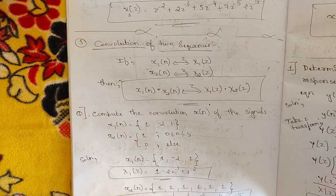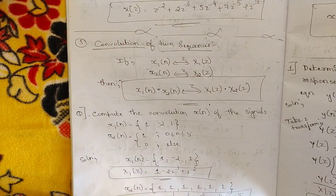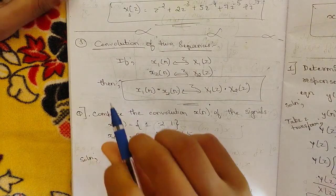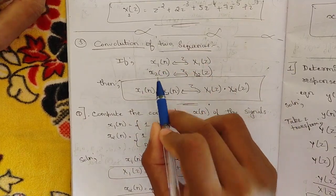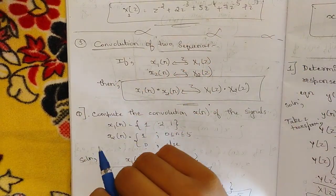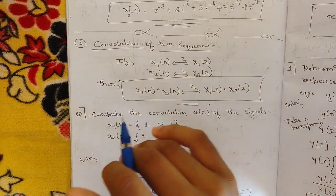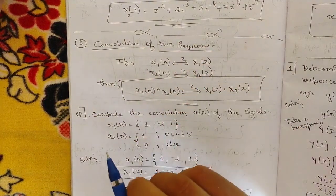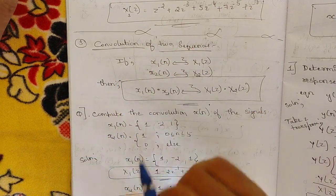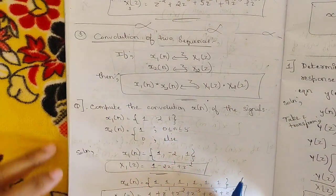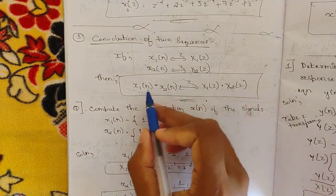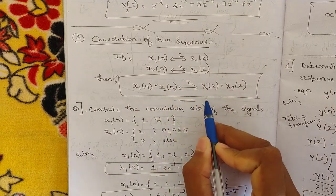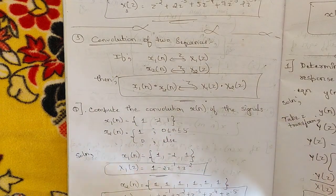The first property I'm going to discuss today is the convolution of two sequences. The convolution property says that if you have two sequences x1[n] and x2[n], you convert them into x1(z) and x2(z) in the Z-plane. Whenever we multiply these two sequences, the resultant x1[n]·x2[n] in the Z-plane should be equal to x1(z)·x2(z).